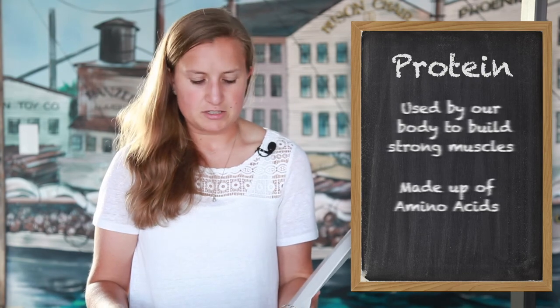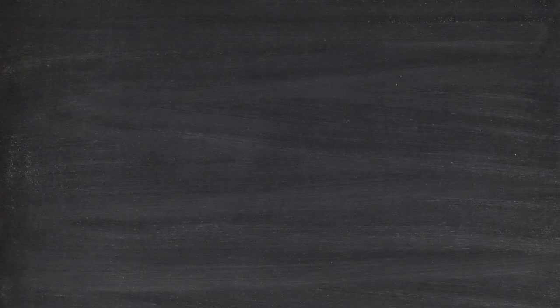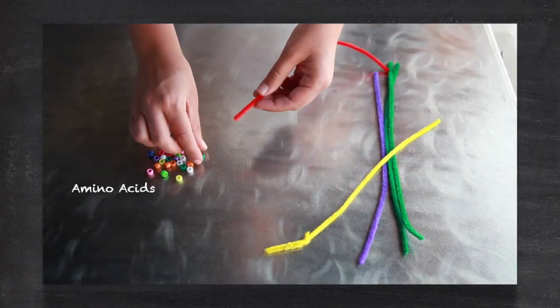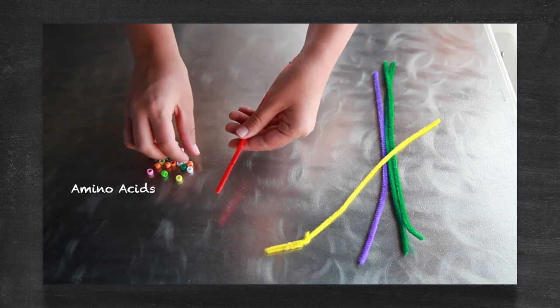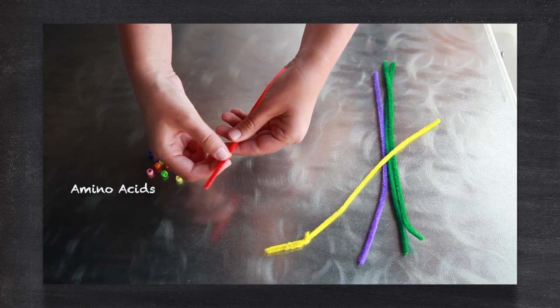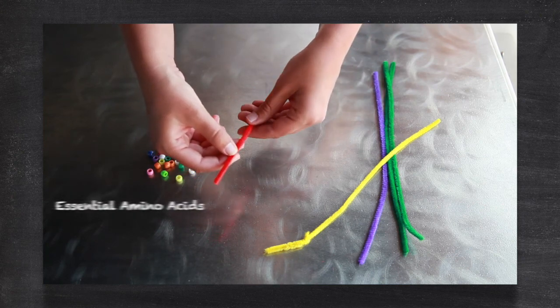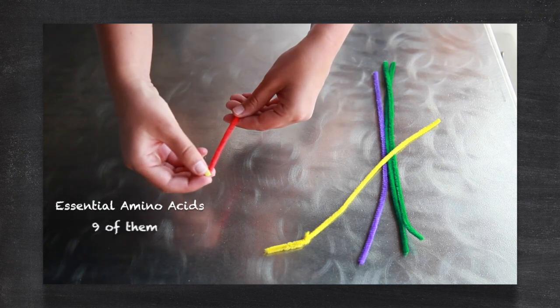Proteins are made up of amino acids. Let me demonstrate what I mean. The beads represent amino acids. There are different colors because there are different amino acids. Our body needs to get some of these amino acids in the food we eat. These are called essential amino acids and there are nine of them.